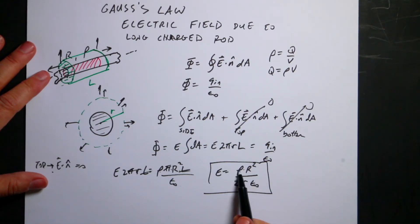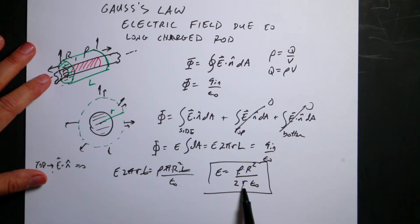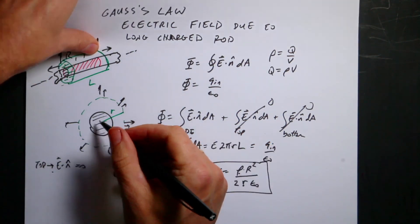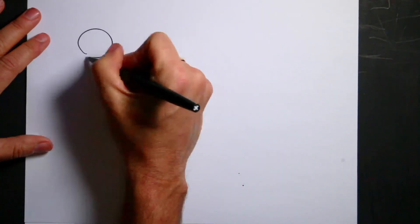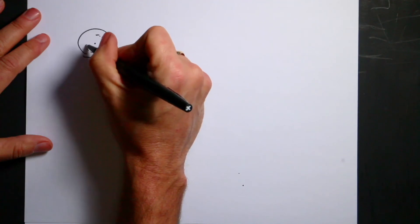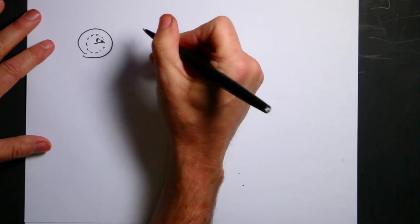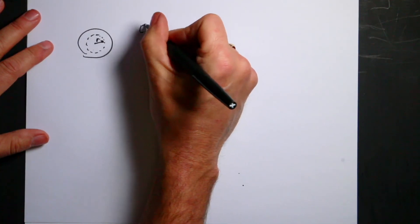Units check: rho has units of charge per cubic meter, multiply by meter squared gives charge per meter, divide by meters gives charge per meter squared divided by epsilon naught — same units as the electric field due to a point charge. Now let's do inside the cylinder. I'll pick a Gaussian surface of radius r inside the rod, and everything looks the same — zero flux on the end caps.